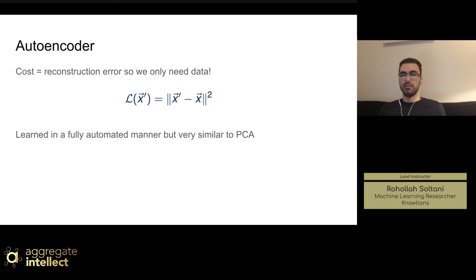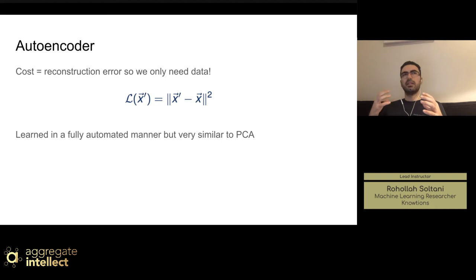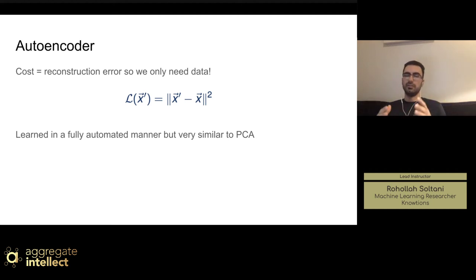An interesting thing about autoencoders is that an autoencoder with a single layer and linear activation is nearly equivalent to PCA (Principal Component Analysis). While PCA is restricted to linear dimensionality reduction, an autoencoder can do linear and non-linear transformations. So basically you can see the autoencoder as a more complex, non-linear version of PCA that can reduce your dimensions and learn the distribution of your data, which is also how you can use it for anomaly detection.